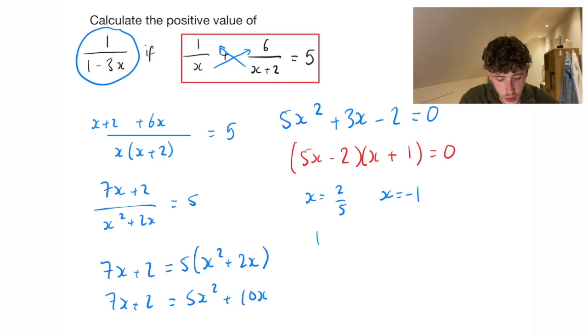Now we want to find the positive value of 1 over 1 minus 3x, when x is either one of these two values. Now I know it seems a bit counterintuitive, but we actually want to go with the negative option here, because it will produce a double negative on the bottom of the fraction.